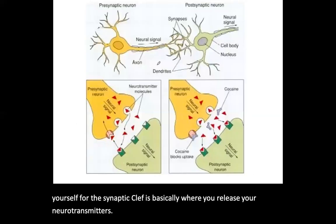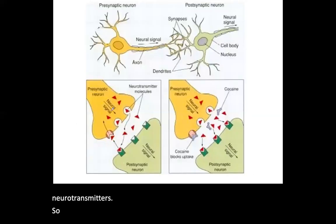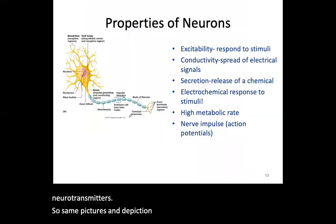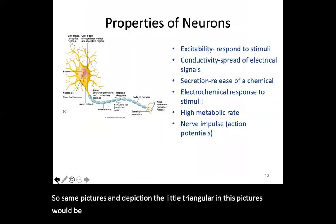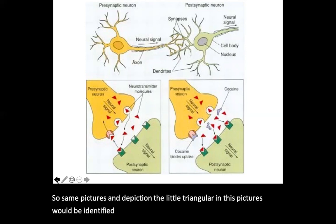In this picture, the small triangular shapes depict your neurotransmitters being released by the first neuron.